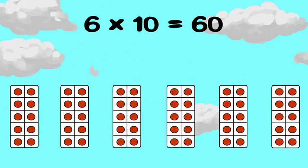Six times ten? That's the easy one. Six groups of ten is sixty. See, the five times facts can be helpful to figuring out the six times facts.